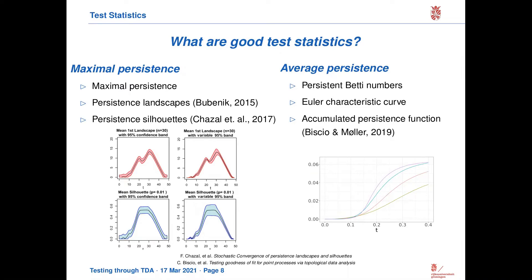Maybe there are just a few points that have a vastly different persistence, a vastly different lifetime than complete spatial randomness. Then we would look at certain characteristics built from maximal persistence, like maybe the maximum persistence itself, persistence landscapes, or suitably weighted persistence silhouettes. On the other hand, there might also be situations where it's not just a single data point or a few data points that are different from noise, but where on average the persistence diagram looks very different. In that case, we might go to persistent Betti numbers, and maybe motivated from the application context, view the characteristic curves, or another summary statistic like the accumulated persistence function.